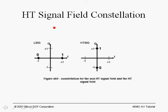At the receiver we need some way to detect the high throughput signal field when receiving the packet. The legacy signal field uses BPSK modulation, as does the high throughput signal field. However, in the legacy signal field the constellation is as shown, but in the high throughput signal field the constellation is rotated by 90 degrees. By detecting this rotated BPSK constellation, we can determine that we have decoded the high throughput signal field, and the receiver can then extract the MCS and adjust its configuration to decode the MIMO high throughput packet.